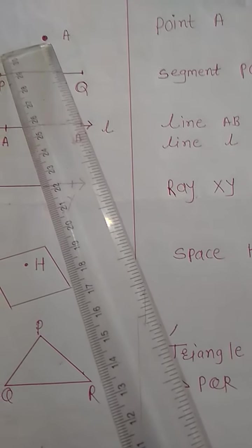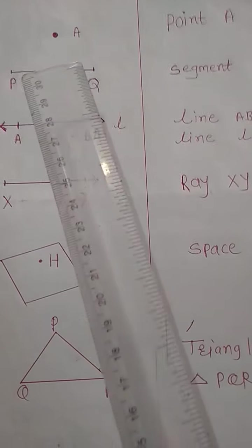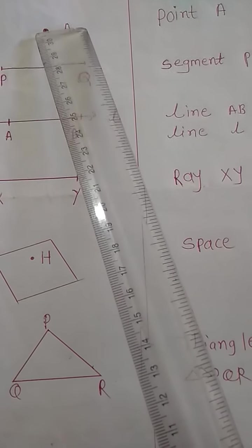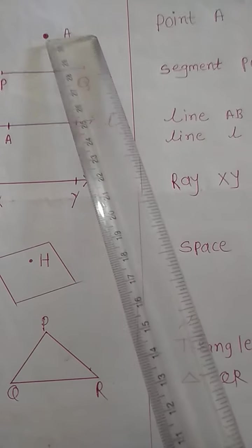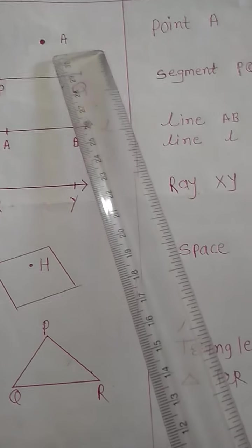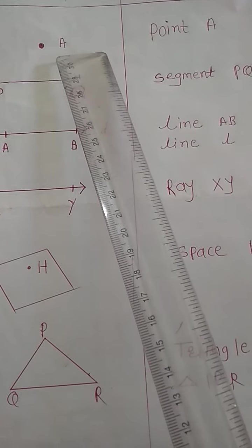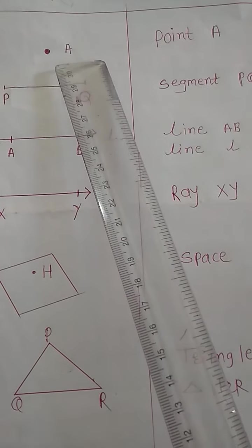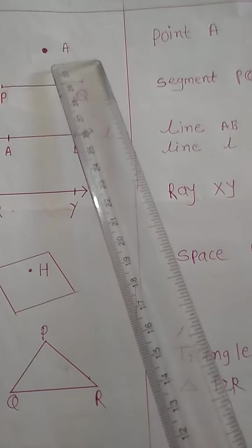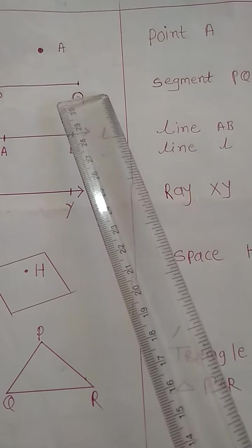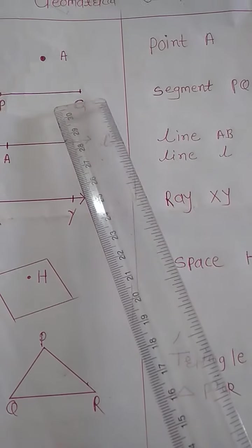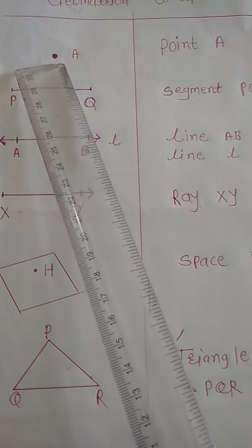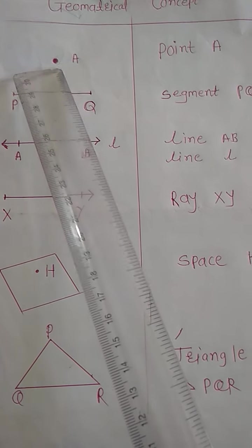Point is shown by a tiny dot. We can use a pen or a sharp pencil to make the dot. The dots in the rangoli are symbols for points. A point can be given a name. Capital letters of the alphabet are used as the name of a point. For example, point P, point A, point B, etc. Here, a point is read as point A.